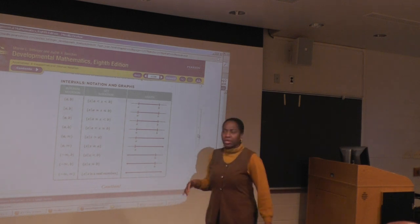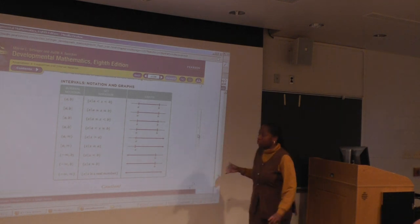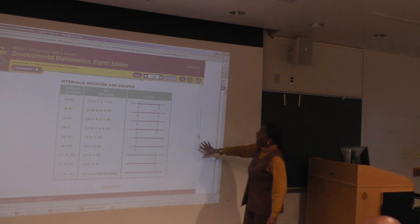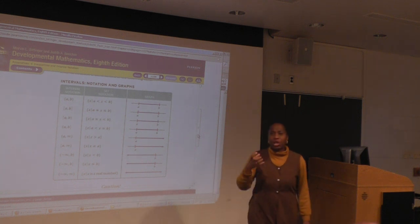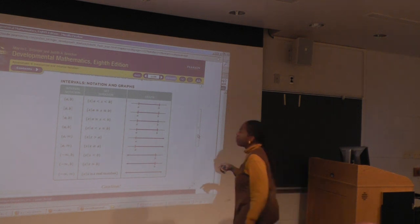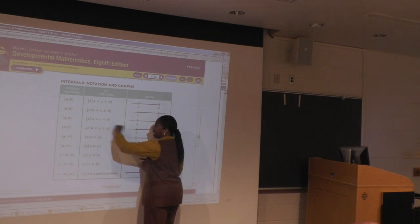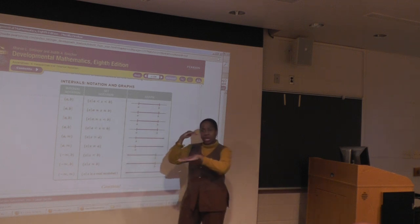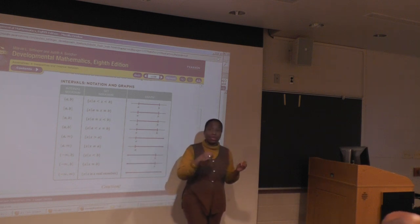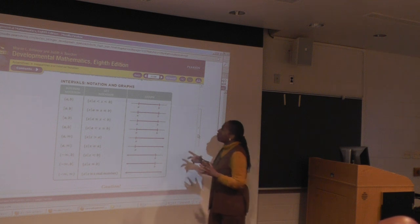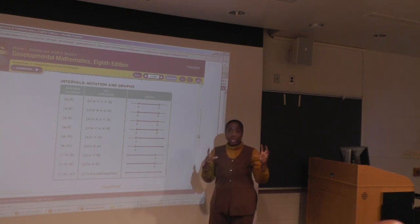So I encourage you, particularly if the interval notation information is screwy to you, that you copy this page down, this chart down, and memorize it. Key hints: if it is included, included from the inequality symbols means an equal under the less than or greater than. If it's not included, it is just less than or greater than. And then with the graph, if it is included,